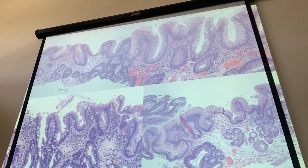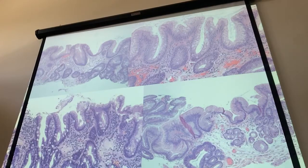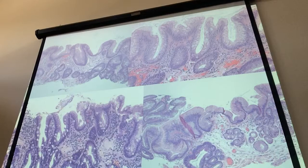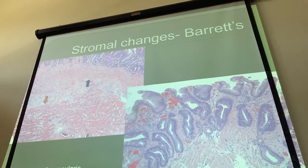I use the term pseudo goblet cells for these, and sometimes I'll do an alcian blue stain or another stain to prove that these are neutral mucins, not acid mucins, and therefore not intestinal. Here's a more fully developed form with lots of goblet cells on the surface. And here's another example with partial areas in some places but not others — it can just depend on where the biopsy comes from, so they have to sample liberally to find these areas and call it Barrett's esophagus.